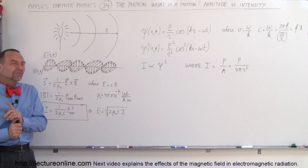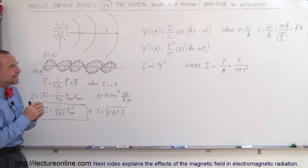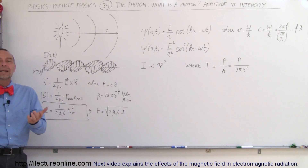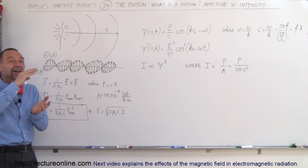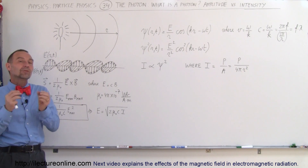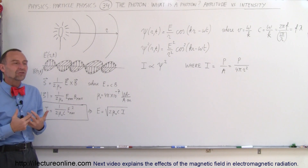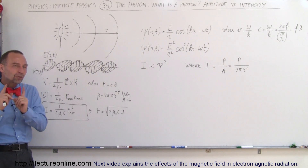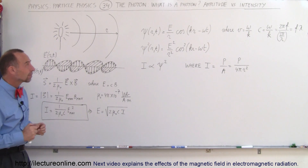So instead of trying to talk about the amplitude of the electromagnetic radiation waves in terms of the size of the photons, we're going to talk about it in terms of the intensity of the electromagnetic radiation. From that I think we have a much better concept of what a photon is.